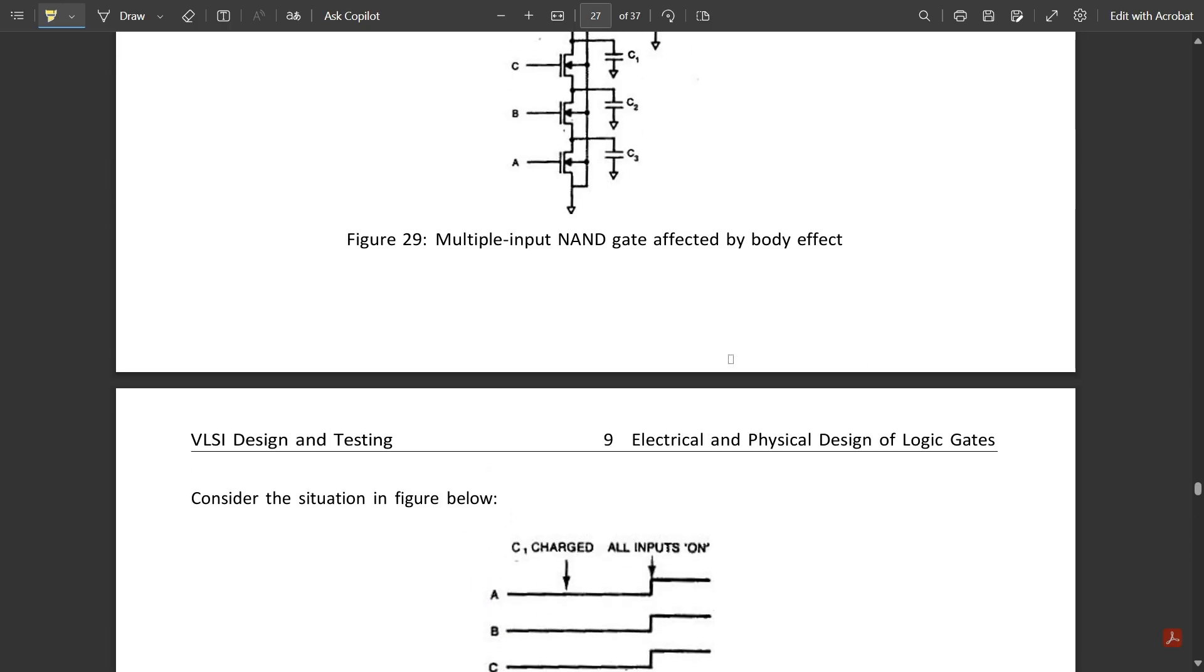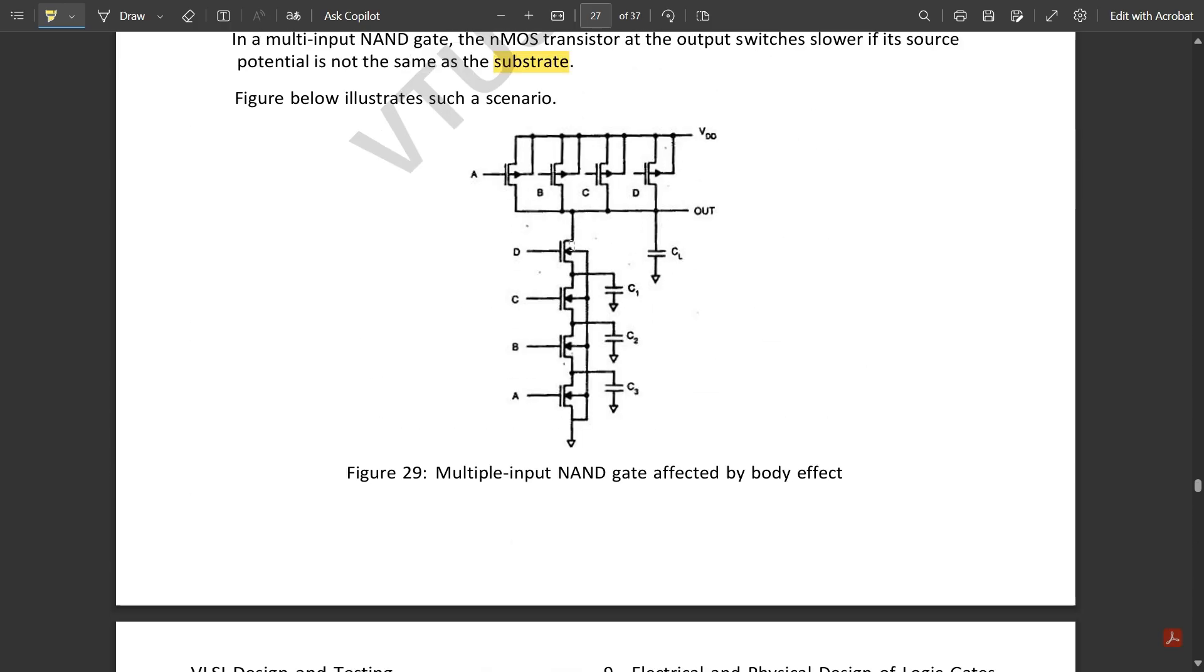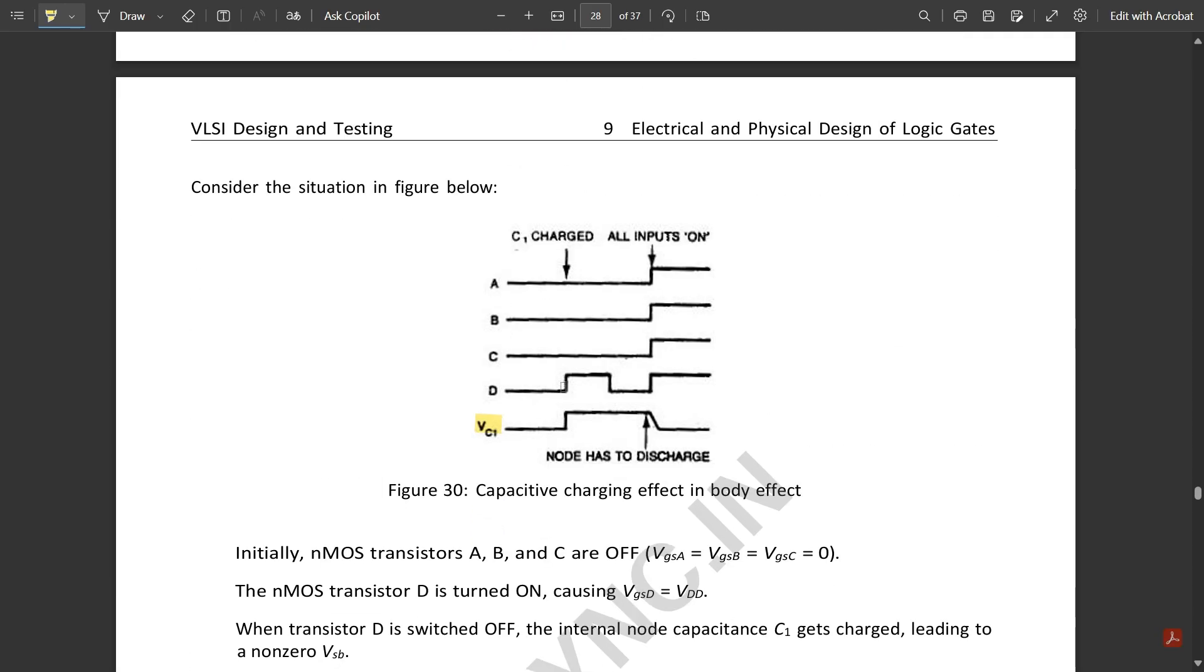This fourth input would be getting toggled because in the connection between the pull up and pull down part, the output is from D. So toggling is taking place in the D terminal, but in A, B, C the charging would be taking place and all inputs are on.